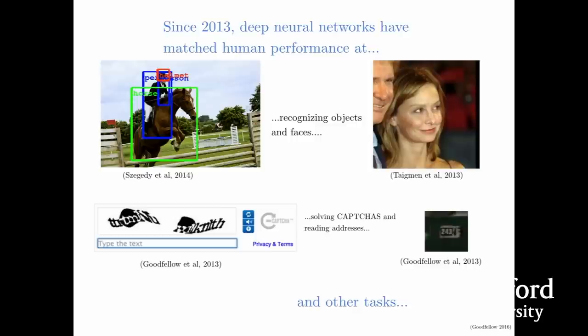Until just a few years ago, these technologies didn't really work. In about 2013, we started to see that deep learning achieved human-level performance at a lot of different tasks. We saw that convolutional nets could recognize objects in images and score about the same as people in those benchmarks, with the caveat that part of the reason algorithms score as well as people is that people can't tell Alaskan Huskies from Siberian Huskies very well. Deep learning caught up to about human-level performance for object recognition in about 2013.